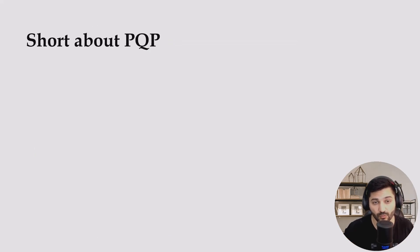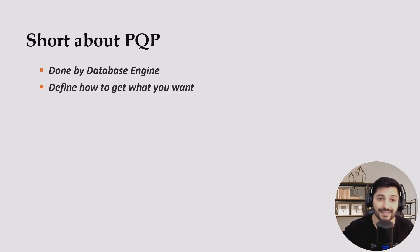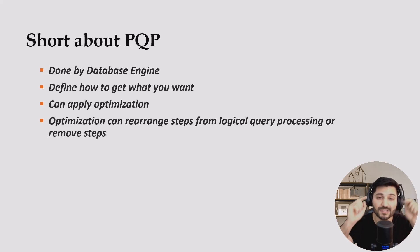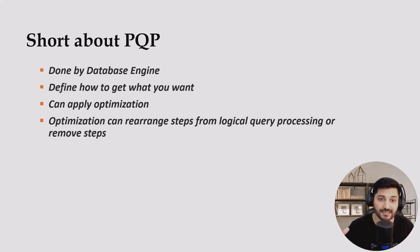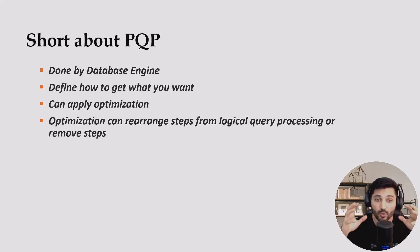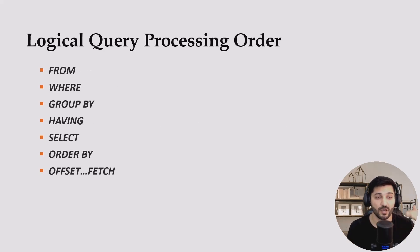Physical query processing is done by the database engine — it defines how to get what you want. It can apply optimization, which means it can rearrange or even remove steps of logical query processing, only if the result matches. The logical query processing order is: FROM, WHERE, GROUP BY, HAVING, SELECT, ORDER BY, OFFSET FETCH. This is the logical query processing order, whereas you write the query in the physical processing order.